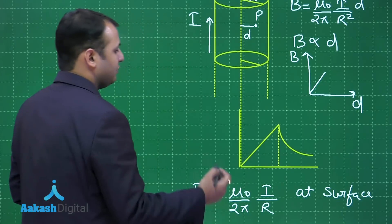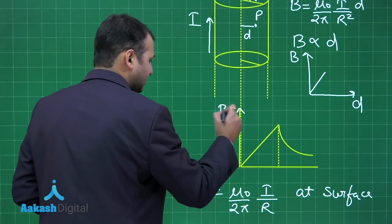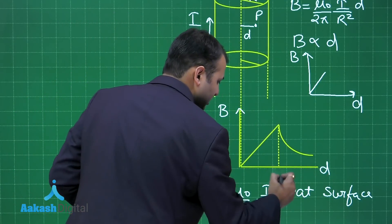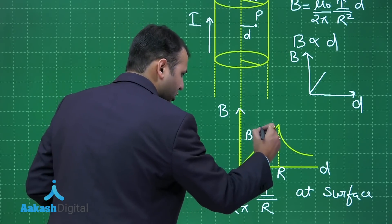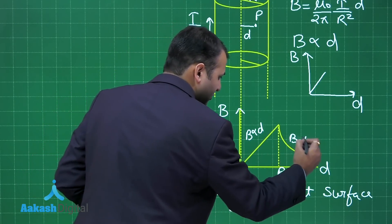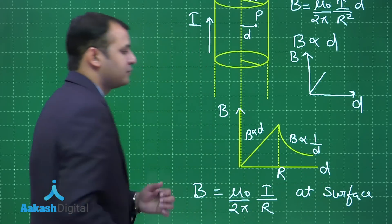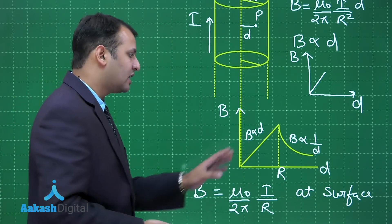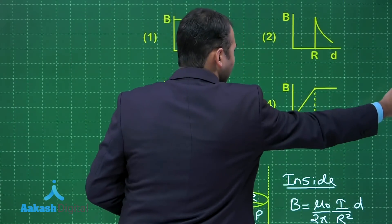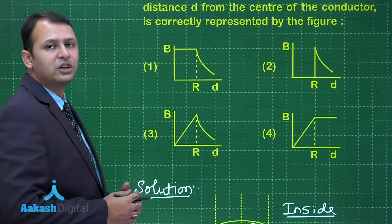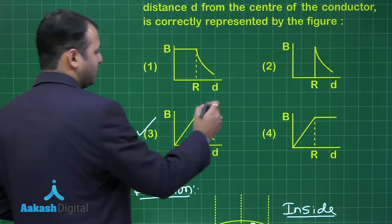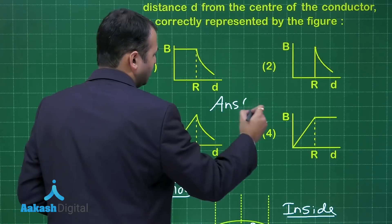So here B is proportional to D and here B is inversely proportional to D. So this is the graph which is best suited to the condition. Let's see among the four options which is the best suited option. Yes, option number 3 is the right answer to this question.